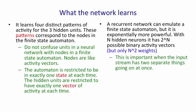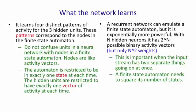This is important when the input stream has two separate things going on at once. A finite state automaton needs to square its number of states in order to deal with the fact that there's two things going on at once. A recurrent neural network only needs to double its number of hidden units. By doubling the number of units, it does, of course, square the number of binary vector states that it has.